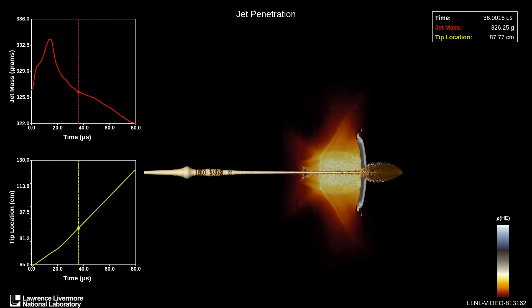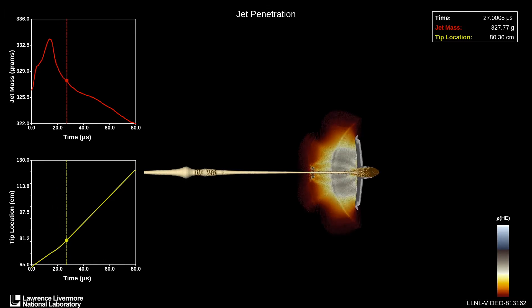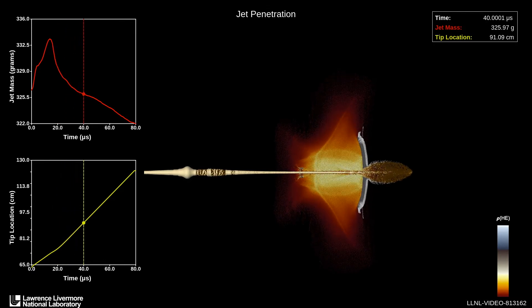Now let's replay the jet penetration one more time. This visualization consists of 10.1 million particles which will run on 1,440 processors.